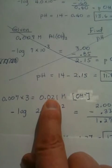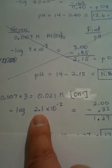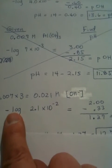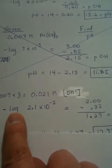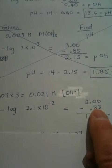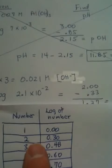When we change this guy into scientific notation, we come up with 2.1 times 10 to the minus 2. Then, we're going to take the minus log of that. And, so we go over here. The minus log is going to be 0.33 for the 2.1. So, the 2.1 on here, you can see, is going to be between 2 and 3.